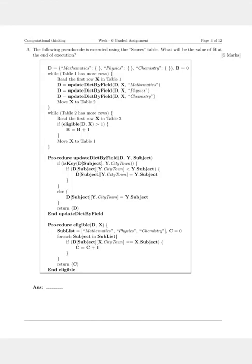Hello learners, hope you are doing well. Let us get into this question. The following pseudocode is executed using the scores table. What will be the value of b at the end of execution?